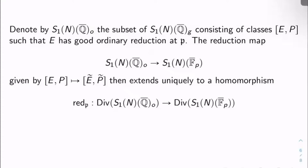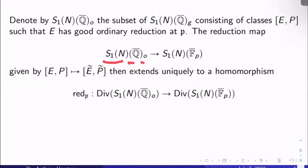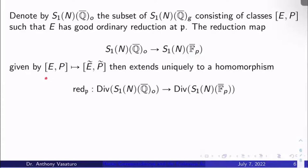The reduction map then from S₁(N)(Q̄)_O to S₁(N)(F_℘), the usual reduction map, it just takes an enhanced elliptic curve class [E, P] and sends it to the class of [Ẽ, P̃], the reduced curve and point Ẽ and P̃ respectively.